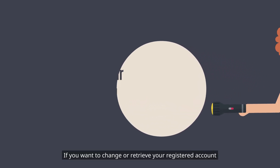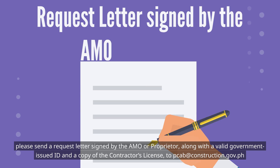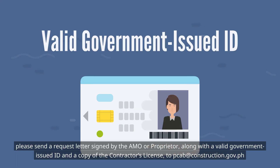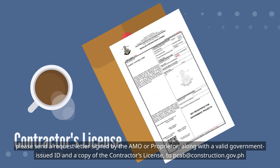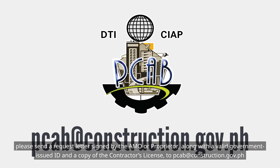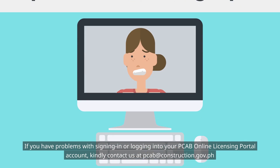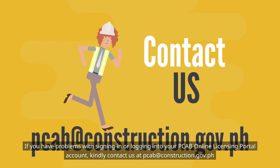If you want to change or retrieve your registered account, please send a request letter signed by the OMO or proprietor, along with a valid government-issued ID and a copy of the contractor's license, to pcab@construction.gov.ph. If you have problems with signing in or logging into your PCAB Online Licensing Portal Account, kindly contact us at pcab@construction.gov.ph.